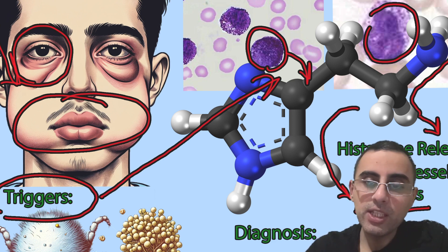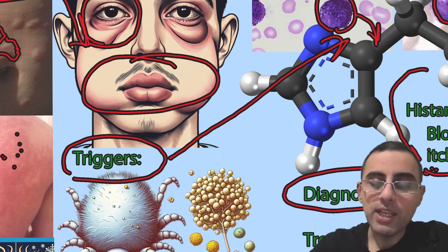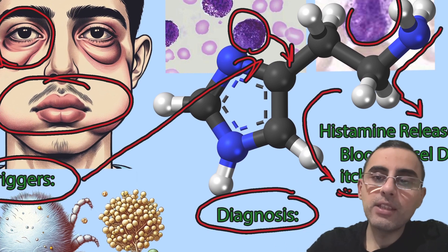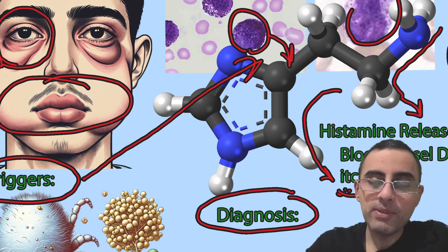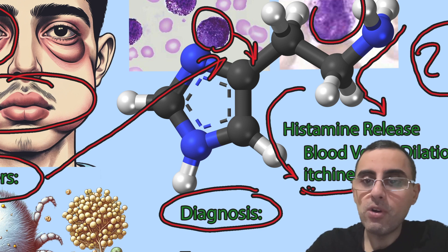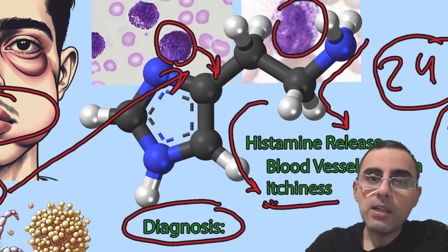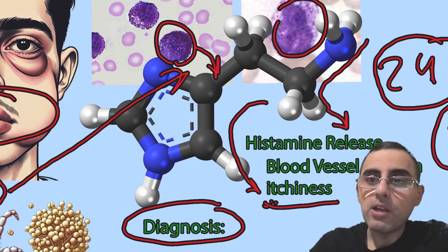So histamine is the key player here. Immune cells release histamine, and histamine causes these symptoms: swelling of skin, redness of skin, and itchiness. Diagnosis is made by symptoms and clinical presentation. Usually hives lasts 24 hours — after 24 hours it will resolve itself. In some cases it can last more than 24 hours, and it is then called chronic hives.